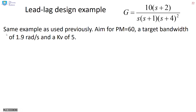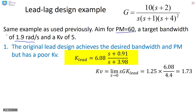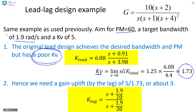Using the same example: start with the lead design with a phase margin of 60 and crossover frequency of 1.9 — already done. This lead design has a poor low frequency gain; the kV is 1.73. If we want kV to be about 5, we need to increase the gain by a ratio of about 3. Using the mechanistic lag design with crossover frequency 1.9: the zero is at 1.9/10 = 0.19, and the pole is at 1.9/(10×3) = 0.0633. Now add this lag compensator to the existing lead in CISO tool.